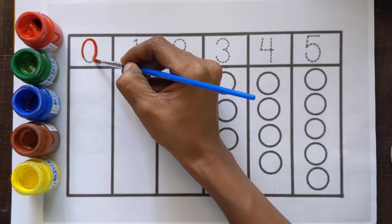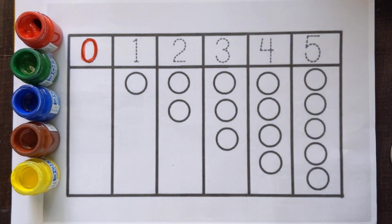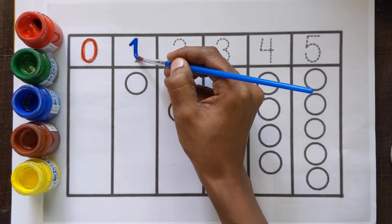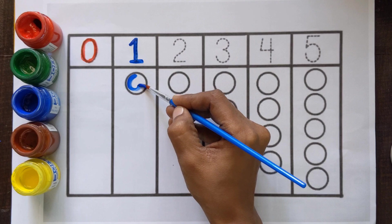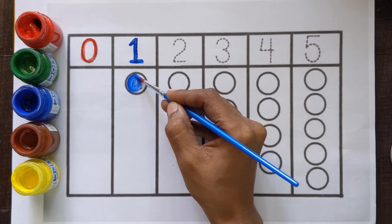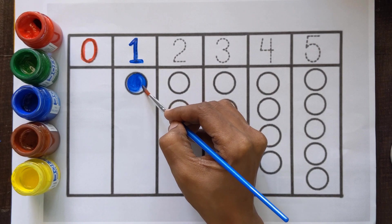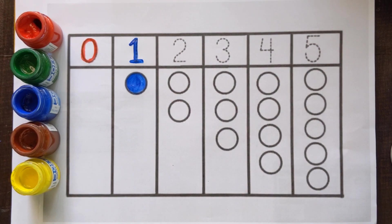0, 0 means nothing. Red color is number 1. Number 1, 1 color ball with a blue color. One ball with a blue color.